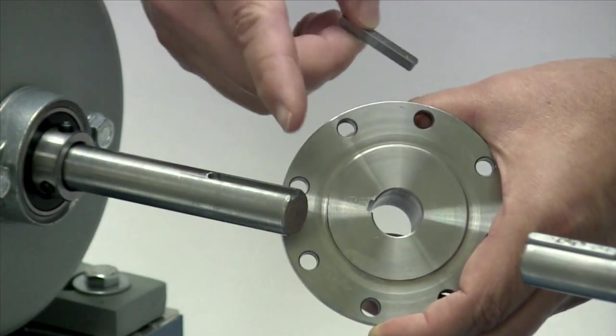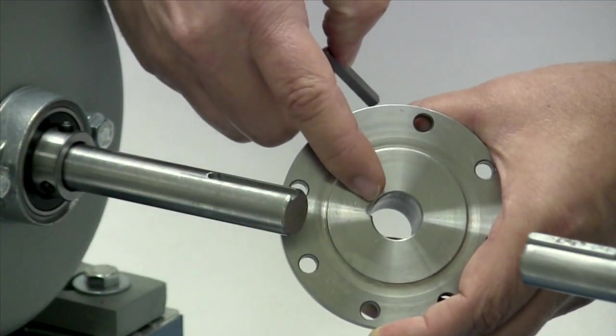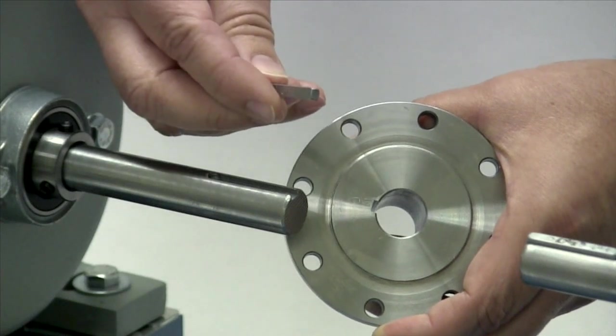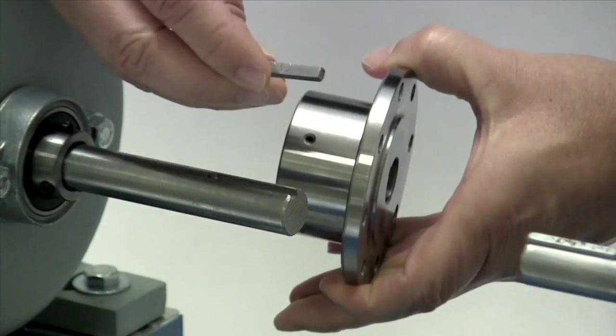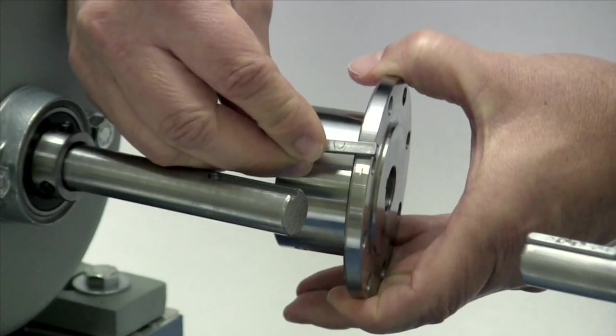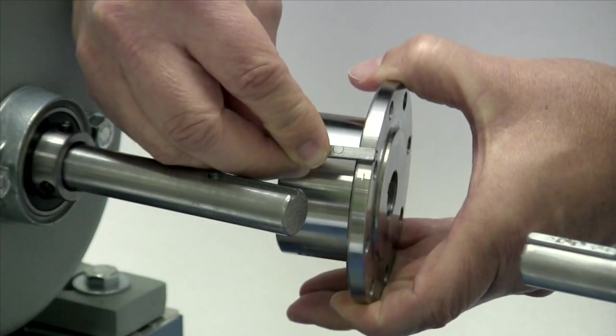If the shaft and the hub both have keyways, make sure you have the appropriate key ready to use when performing this installation. Ideally, the key should be the same length or slightly longer than the hub to transmit the maximum allowable torque.